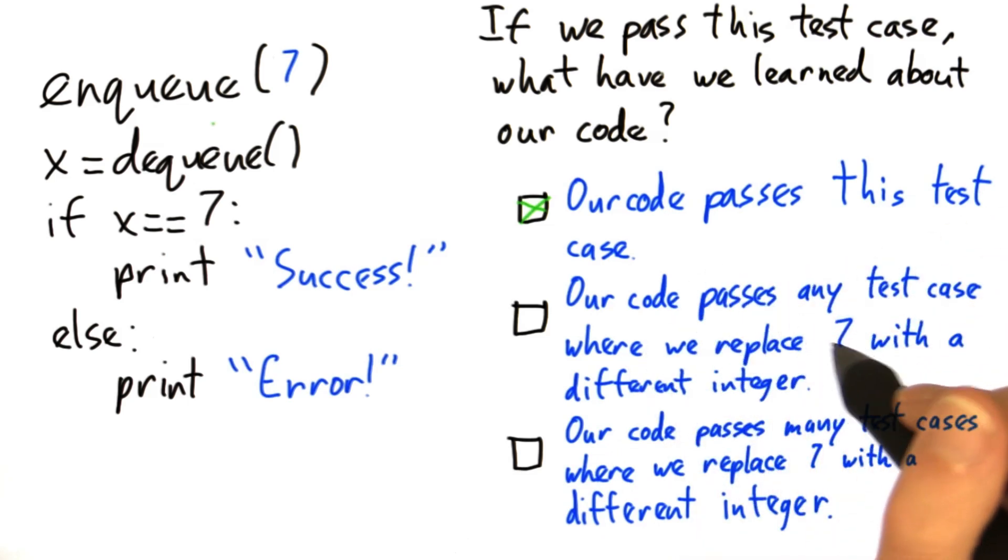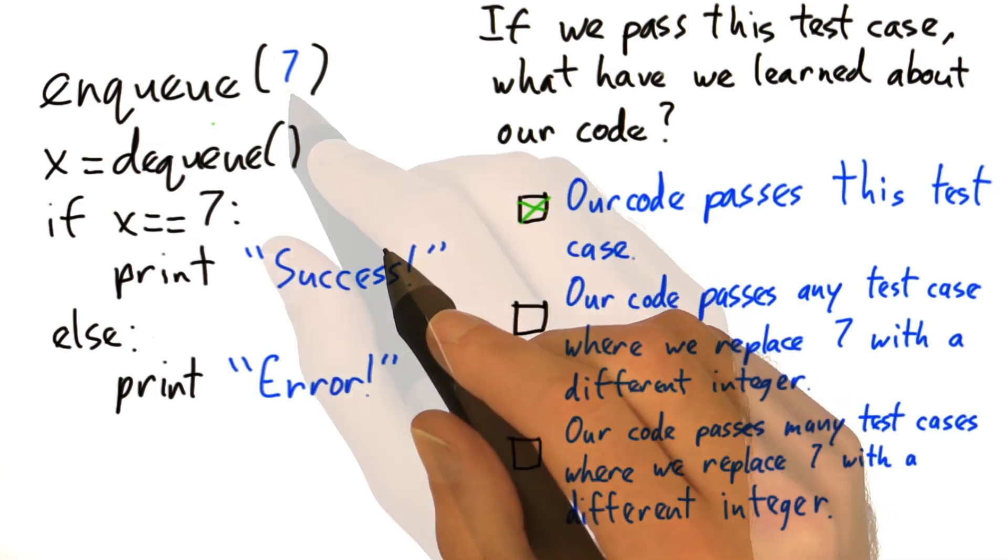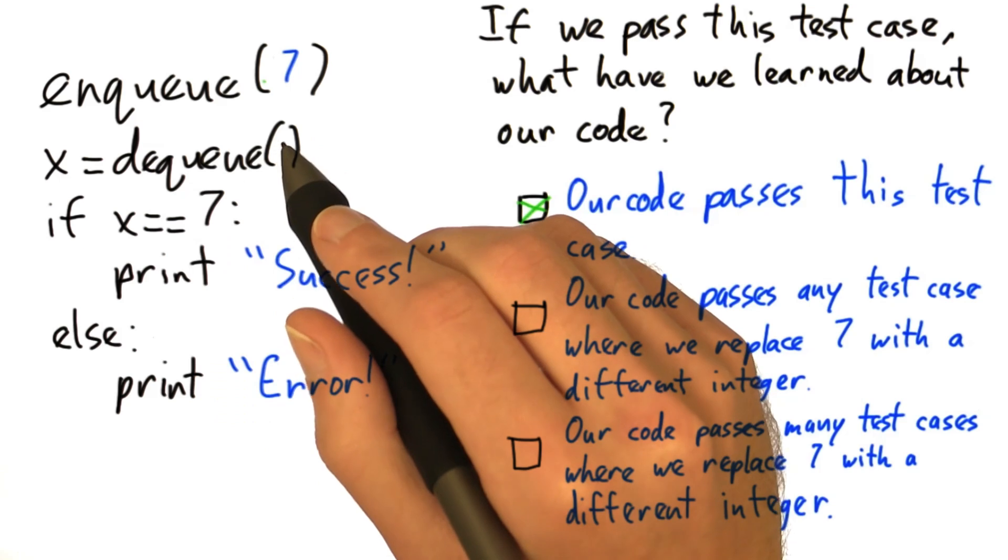Does our code pass any test case where we replace 7 with a different integer? Well, maybe not.